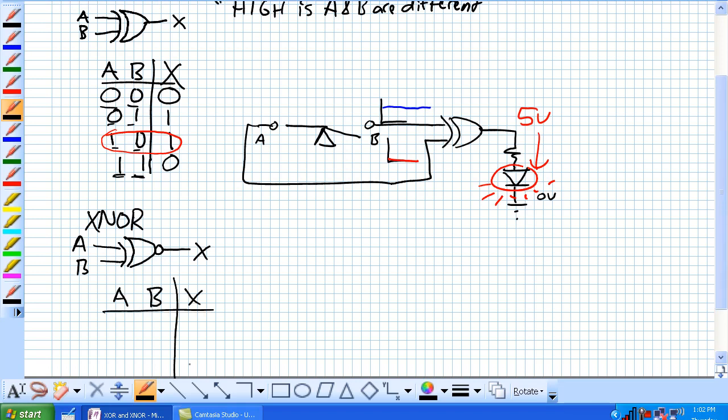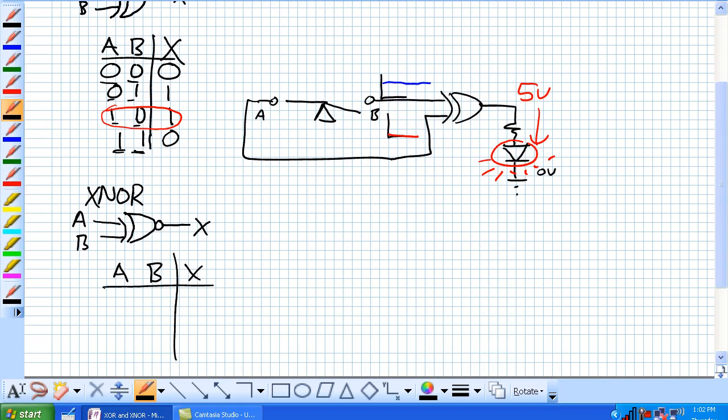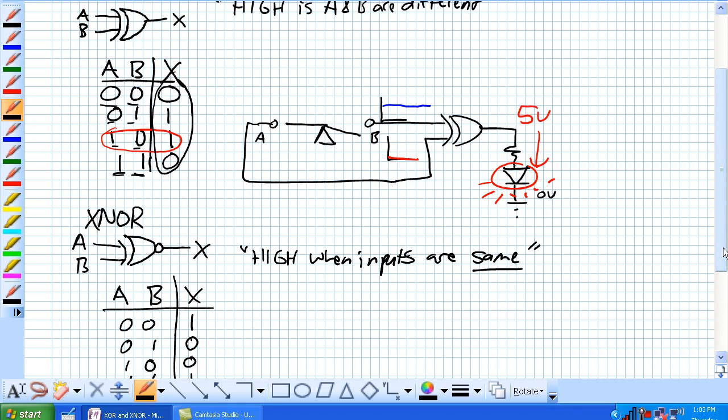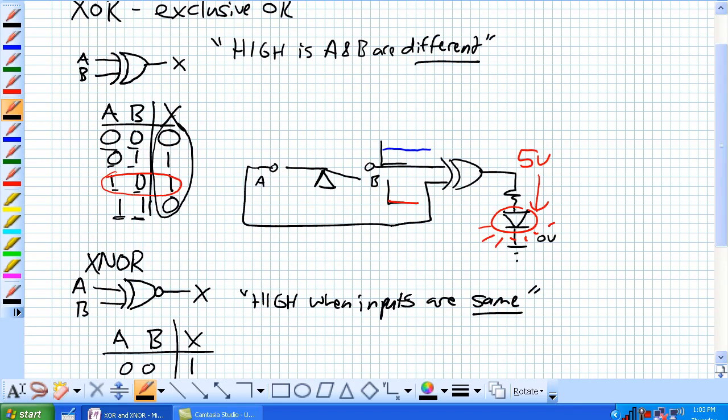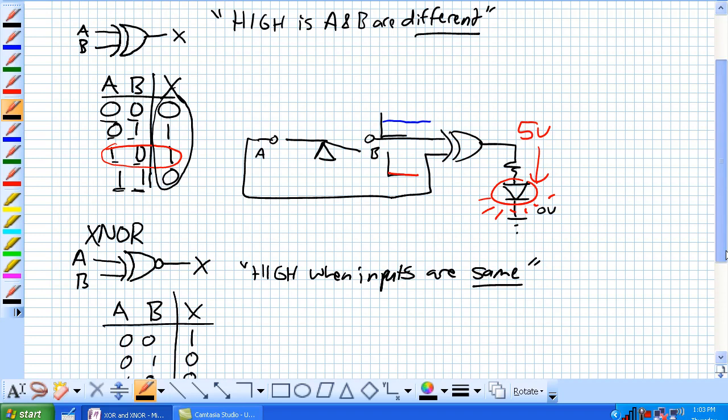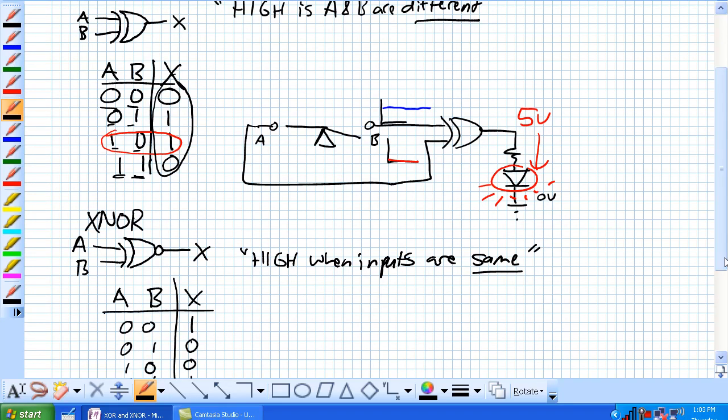So A, B, X, and we have this output for an exclusive OR. What is the negation of that? 1, 0, 0, 1. So it's high when they're the same. Okay, exclusive OR, high when inputs are different. Exclusive NOR, high when inputs are the same.